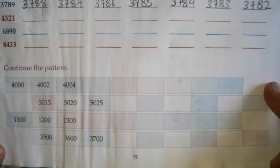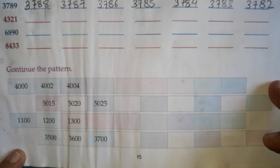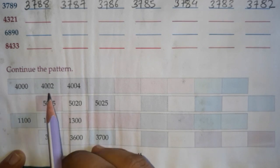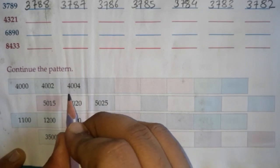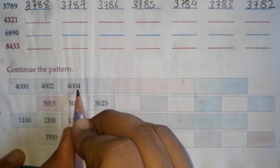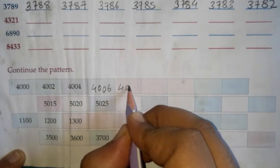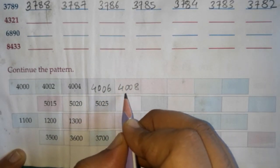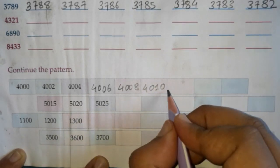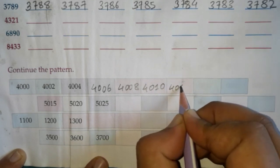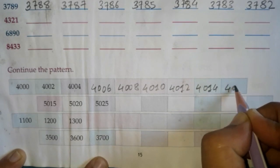The next question is continue the pattern. The first pattern is 4000, 4002, 4004 — they are adding plus 2 to each number. Adding plus 2 to 4004, the next number will be 4006, then 4008, then 4010, then 4012, 4014, and 4016.